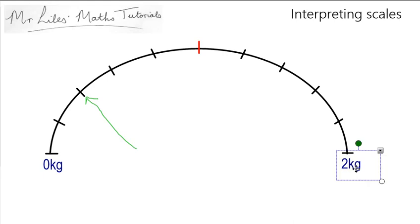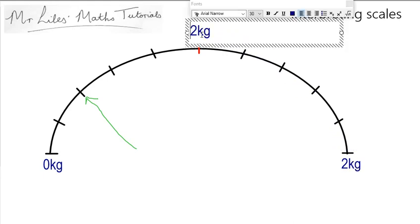Now, a bit of common sense will tell you that at the top and in the middle is half of the amount at the end, so there's one kilogram there.